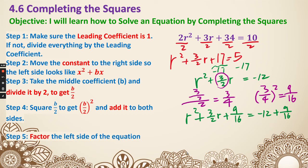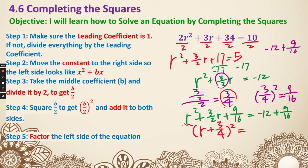We are going to factor the left side. Because we just found 3 fourths, we take r — the p part — and then that number 3 fourths, which is q, then squared. Even if you factor it out manually, you get the same thing. As for the right side, negative 12 plus 9 over 16 equals negative 192 plus 9 over 16, which is negative 183 over 16.